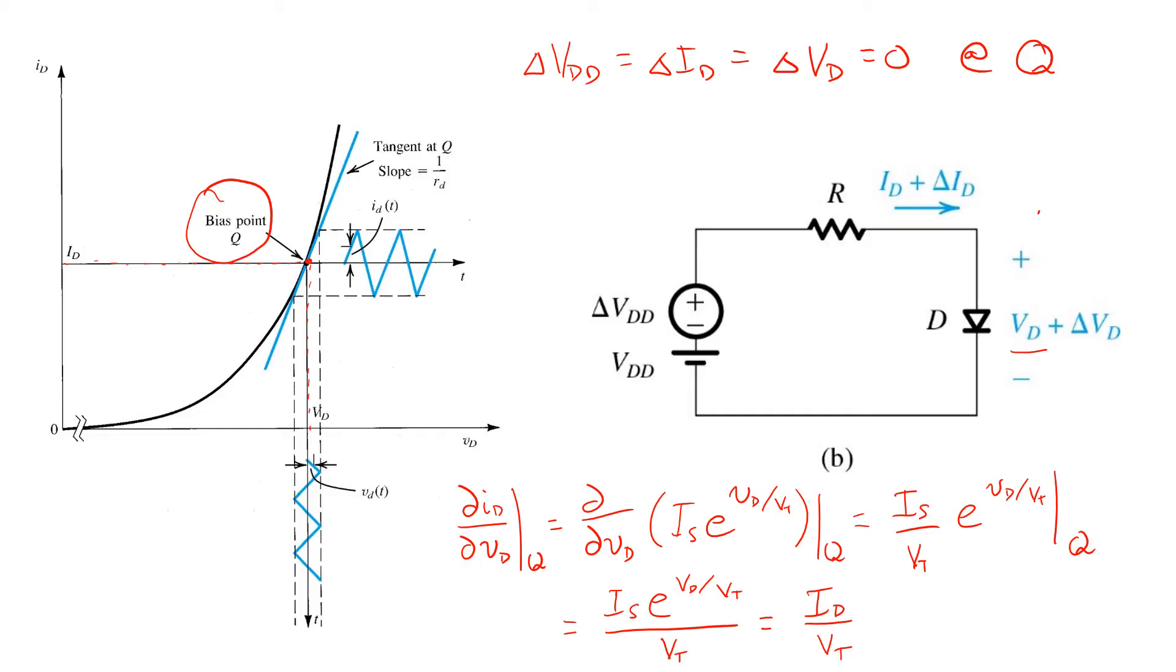You'll notice that this expression has units of one over ohms. That makes sense because it's a proportionality constant between voltage and current. So we can think of that quantity as a conductance or one over a resistance, which we would call a small signal resistance, RD, having units of ohms. That small signal resistance, RD, relates the incremental quantities ID and VD.